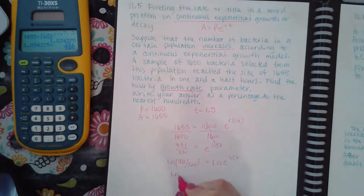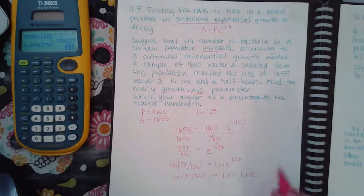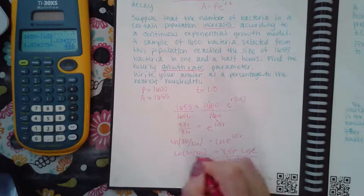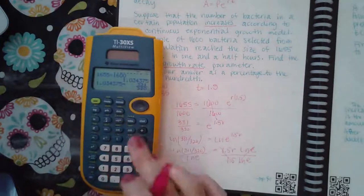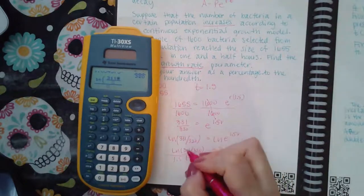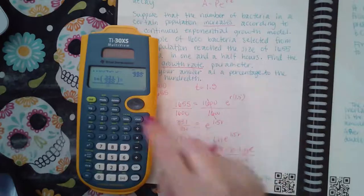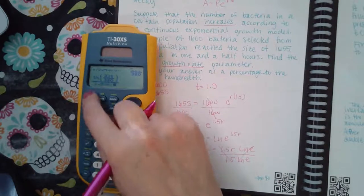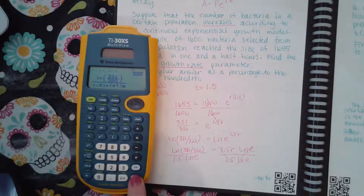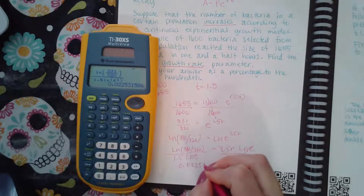And then this exponent is going to come down. Remember that the ln of e is 1. If you don't remember, just divide by 1.5 and ln of e, and do the same on both sides. When you type this in, you're going to type ln of 331 over 320, and then at the bottom you have 1.5 ln of e. My calculator doesn't let me just type in e so I always have to put an exponent, and if I just want e you use the exponent 1. And so I get 0.022531586.